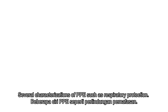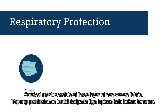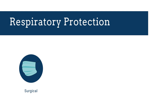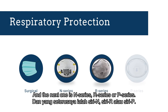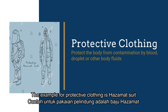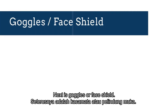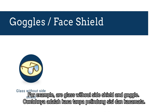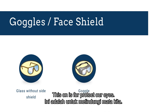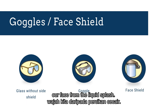Several types of PPE include respiratory protection — for example, a surgical mask, which consists of three layers of non-woven fabric — as well as N series, R series or P series respirators. Next is protective clothing to protect the body from contamination, such as a hazmat suit with gloves and shoe covers. Next are goggles or face shields — for example, glasses without side shields or goggles — to protect eyes. A face shield protects the face from liquid splashes.